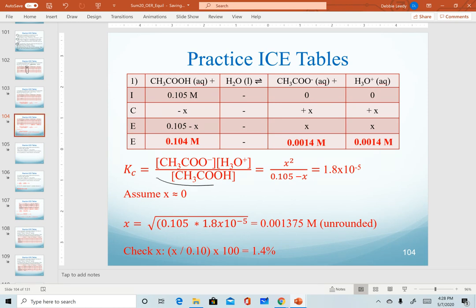All of the other steps remain the same though. Equation, ice table, expression, math equation, and then solve for X. The easiest way in this one is to assume that X is going to be about zero because we have a small K value, so that X can go away in the denominator. This becomes your setup with that closed parentheses here so that we take the square root of the product of these two numbers to get our X value.